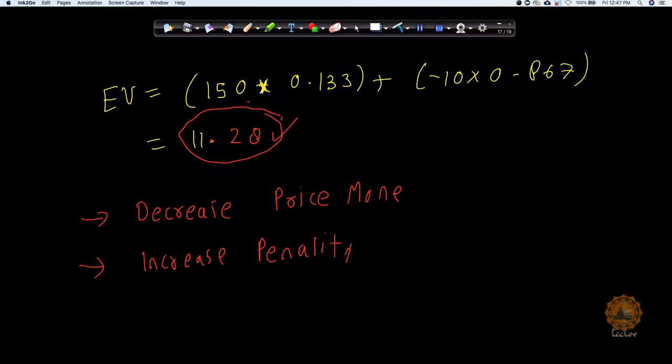So what is the way they can do that? They can decrease the prize money from 150 to let's say 100, or they can increase the penalty from 10 rupees to 50.